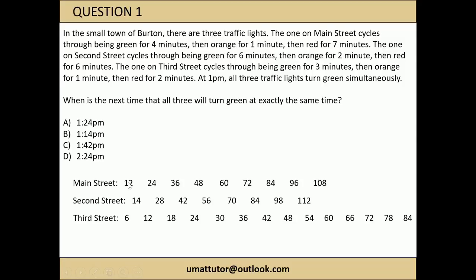Given the question asks when all 3 will turn green at the same time, we need to find a number that's common to all 3 rows. It's easiest to go through the answers - the answer has to be either 14, 24, 42 or 84 minutes past 1pm. 14 is only in 2nd Street, 24 is in Main Street and 3rd Street but not 2nd Street, 42 appears a couple of times but not in all 3. But 84 minutes past 1pm appears in all 3 rows, so D is the correct answer.